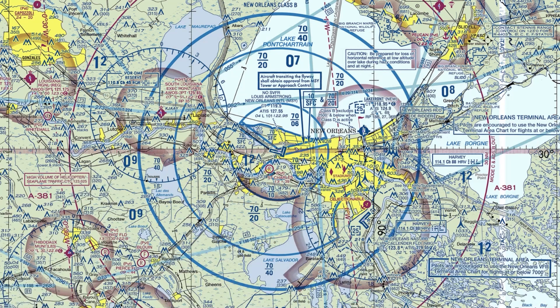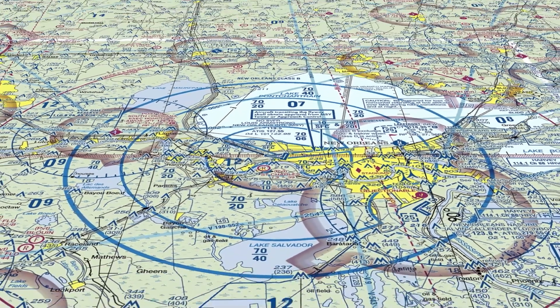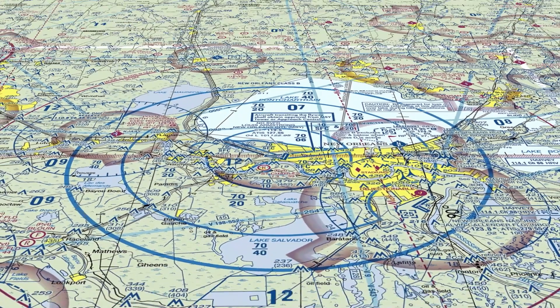Here is an ordinary sectional chart, something all pilots become familiar with. These rings indicate airspace restrictions relating to this Class B airport. Right now we're seeing it like we would if it were laid out on a table. But let's tilt our view and see what the real-world application might look like.